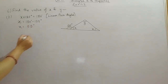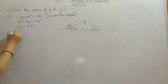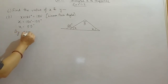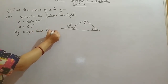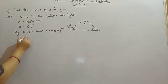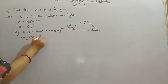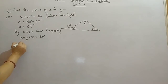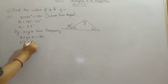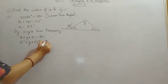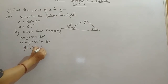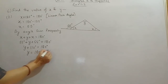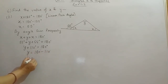After finding X, we now use angle sum property in this triangle. By angle sum property, X plus Y plus X equals 180 degrees. Since X equals 55 degrees, substituting gives 55 plus Y plus 55 equals 180, so Y plus 110 equals 180, and Y equals 70 degrees.